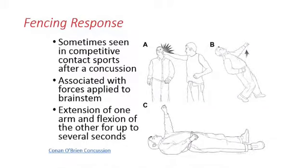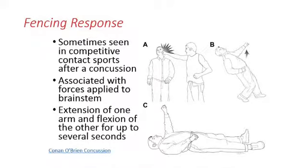There are some other interesting motor phenomena we sometimes see. One is called the fencing response, often seen in competitive contact sports after a concussion. Having been a neuropsychologist for the Atlanta Falcons and the Atlanta Thrashers hockey team, I watch players closely when they get hit for signs like the fencing response. It's associated with a large amount of force applied to the brain stem — a rapid acceleration-deceleration maneuver — resulting in the extension of one arm out and a flexion upward of the other for up to several seconds.